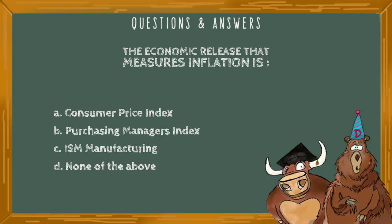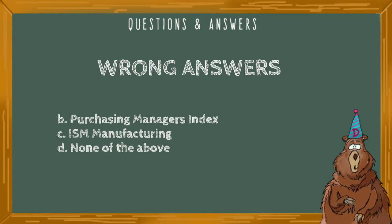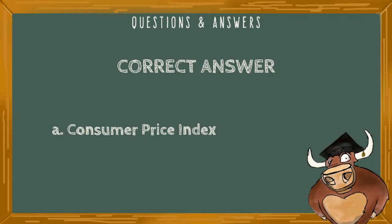The economic release that measures inflation is: A) Consumer Price Index, B) Purchasing Managers Index, C) ISM Manufacturing, or D) none of the above. The wrong answers include B) Purchasing Managers Index, C) ISM Manufacturing, and D) none of the above. The correct answer is A, the Consumer Price Index. The consumer price index measures a basket of goods by the average citizen of the country. The higher the pricing, the more inflationary the situation has become for the average person.